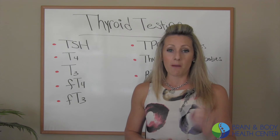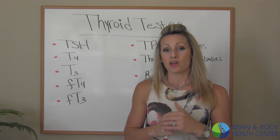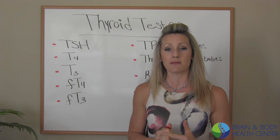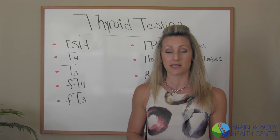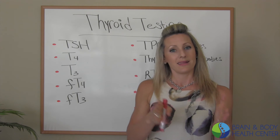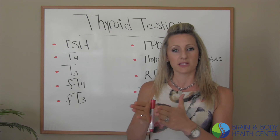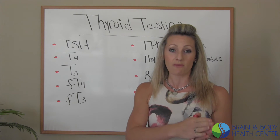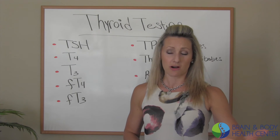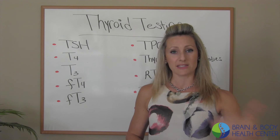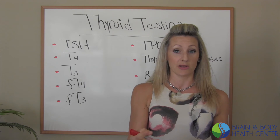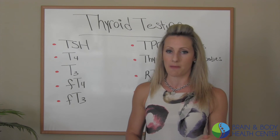If those ever come back positive on a test, your immune system has flagged that. Oftentimes I'll get patients coming into my office who have high antibodies, but their doctor tells them they have nothing wrong — that they don't have the autoimmune disease. That's incorrect, because if your body has immunity against your thyroid, that is an autoimmune disease. Just like if you had RA factor, you'd have rheumatoid arthritis. You have to take the antibodies and the symptoms and correlate the two to be able to diagnose that.